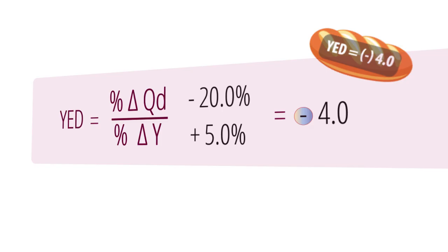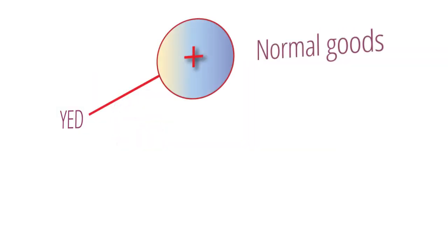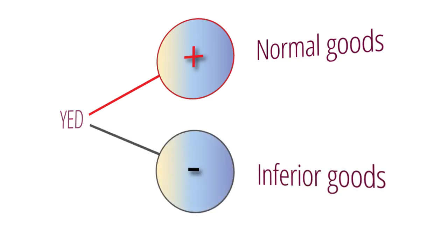Goods where the relationship is positive are called normal goods, and inferior when the relationship is inverse. However, there is another aspect to income elasticity — exactly how responsive, that is, how elastic, demand is to a change in income. Economists use the concept of proportionate to compare responses.